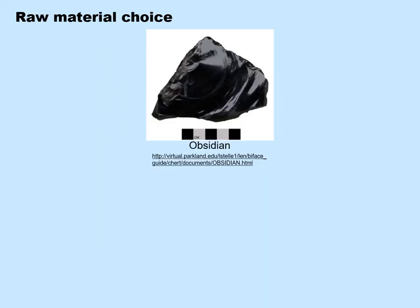The choice of raw material has a number of implications. Different raw materials can be worked in different ways, so if you would like to make a very large, very thin type of biface, not every raw material lends itself to doing so. Also, the raw material may tell you whether it was locally obtained or whether it is exotic — that is, it had to be gotten from somewhere else or traded from somewhere else.